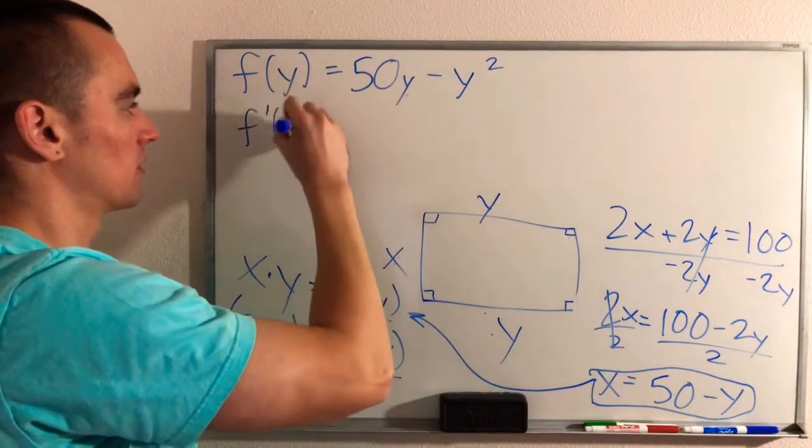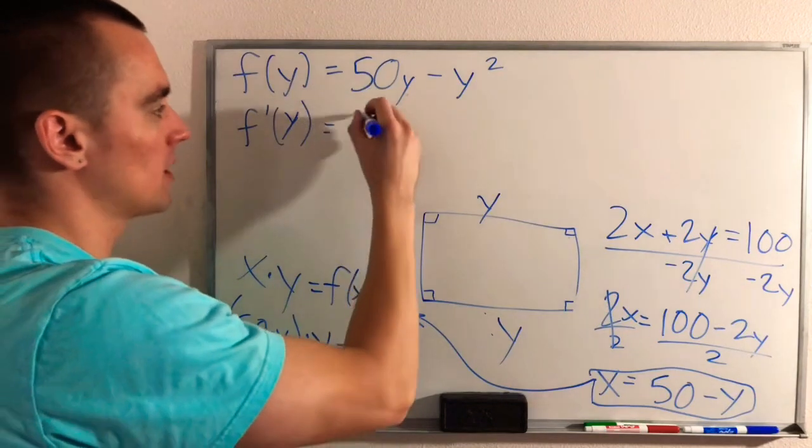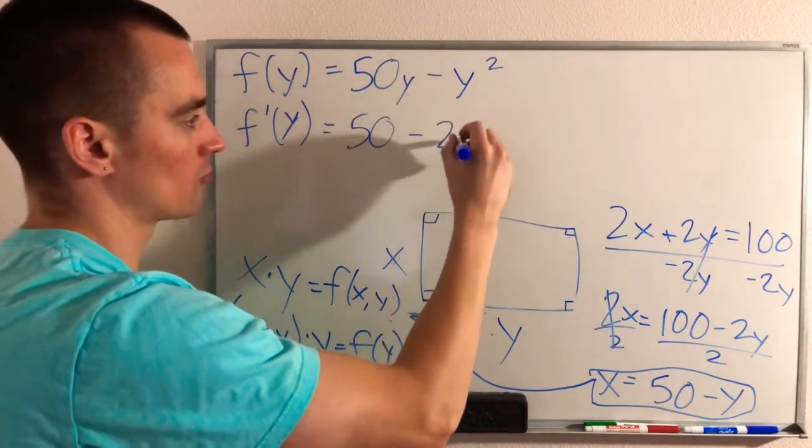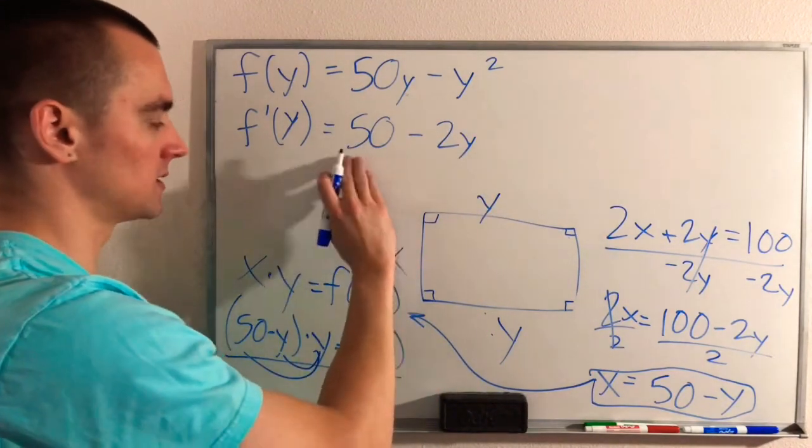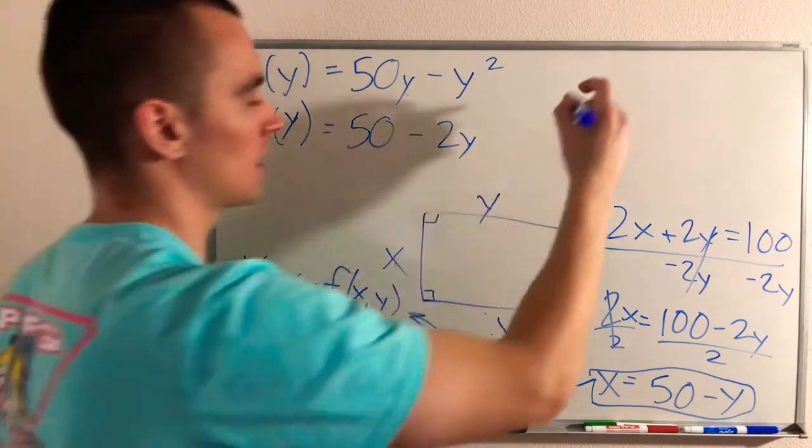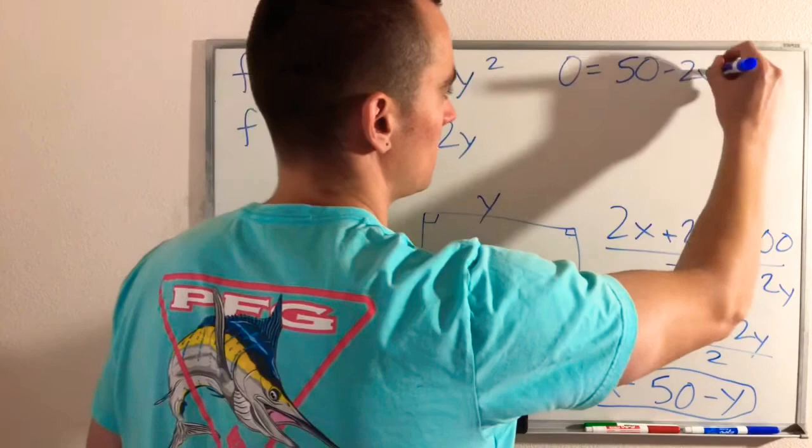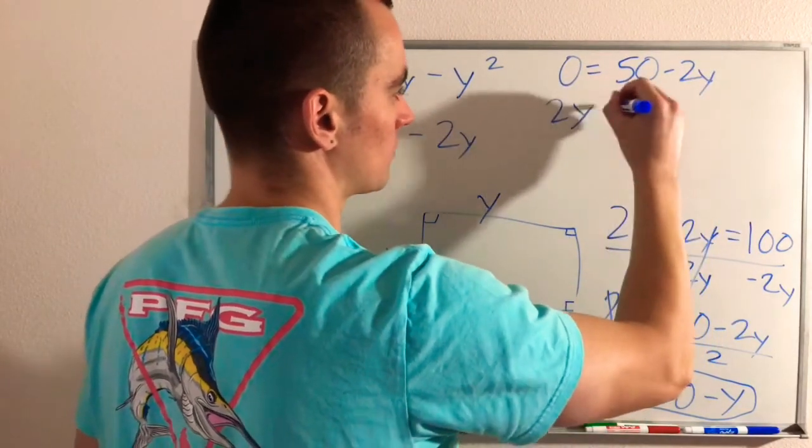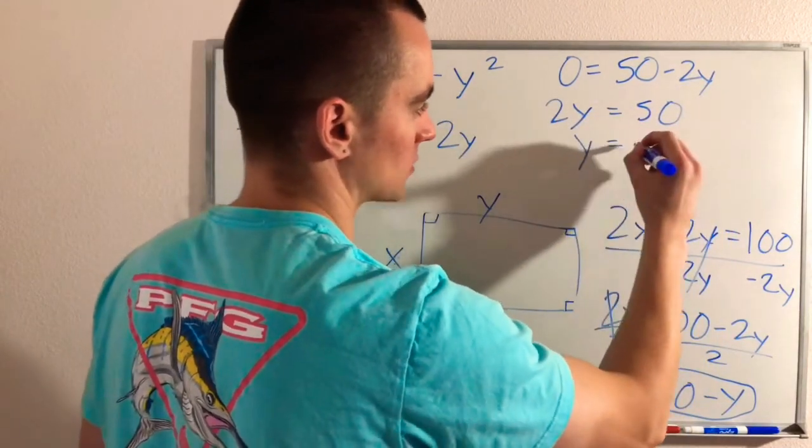Now, if we want to take the derivative of this function, the derivative of 50Y is just 50. And then the derivative of Y squared using the power rule is going to be 2Y. So then what we'll do is we'll take this equation and set it equal to 0. So doing that will give us 0 equals 50 minus 2Y. We can add 2Y to both sides. And then we can divide both sides by 2, giving us Y equals 25.